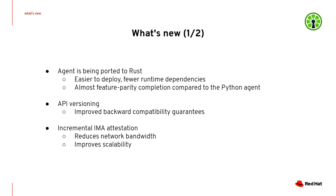Another exciting change is that QLIME now supports incremental IMA attestation. It's no longer needed to send the full IMA measurement list every time attestation is performed, but only the subset that has changed from the previous attestation. In practice, this reduces the requirements on network bandwidth for the attestation, which in turn improves scalability further.